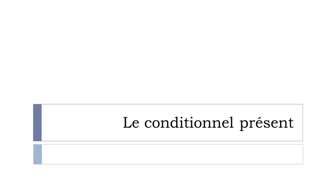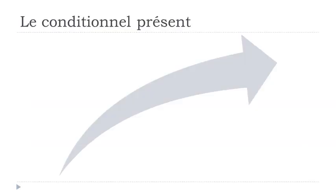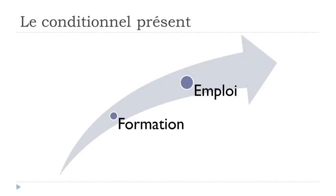So basically the conditionnel is, as in English, the conditional form — so 'would', 'could'. We've got different tenses for that, and the first one we will see, the more classic tense, is the present form. In this lesson we'll see first la formation — the way to build it — and then l'emploi — when you should use this conditionnel présent form.